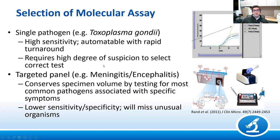If you're less sure about a specific pathogen but suspicious that collected tissue represents an infection, you can use a targeted panel such as for meningitis-encephalitis, using CSF or brain tissue. These tests conserve specimen volume by testing for the most common pathogens associated with specific symptoms. However, they have lower sensitivity and specificity and will miss unusual organisms.